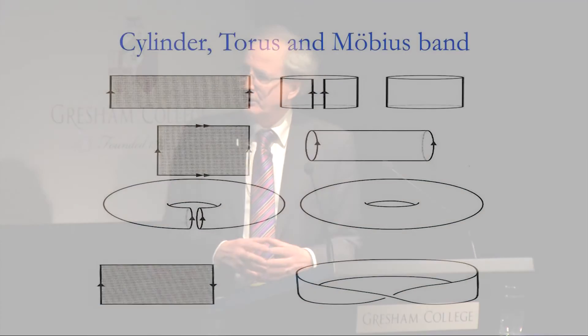Now let me reinforce your nervousness of rectangles by briefly rehearsing what we've done. Identifying a pair of opposite sides with the same orientation gives a cylinder. Identifying both pairs of opposite sides with the same orientation gives a torus or doughnut. Identifying one pair of opposite sides with a half-twist gives the Möbius band. So now let's ask: what happens if we identify opposite sides where the top and bottom are given the same orientation but the left and right are given a twist?